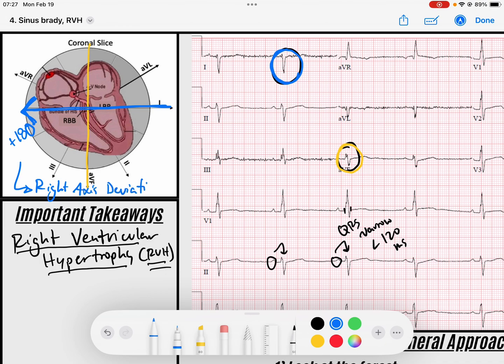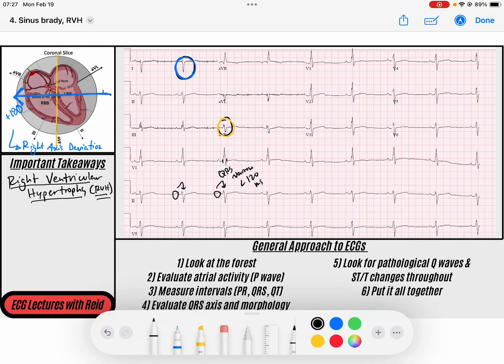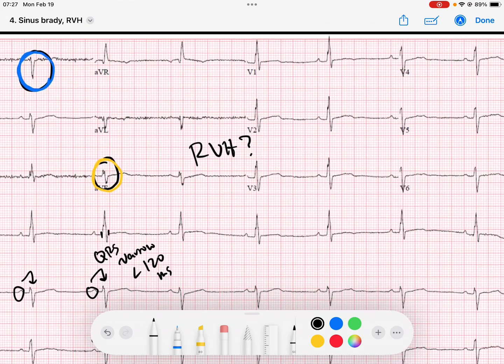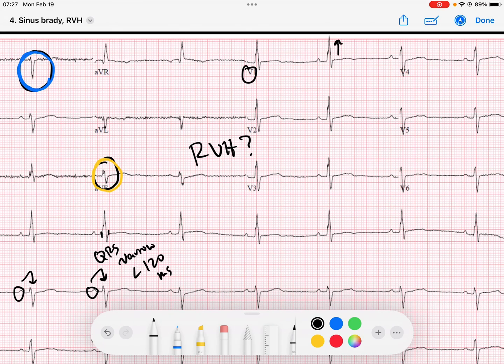We see right axis deviation and we think, what could cause this right axis deviation? The first thing that should come to your mind is, does this person have right ventricular hypertrophy? This is in the setting of our sinus rhythm, so we know the AV node is conducting the signal down. I look into V1 and I see these dominant R waves. That's not typical of V1.